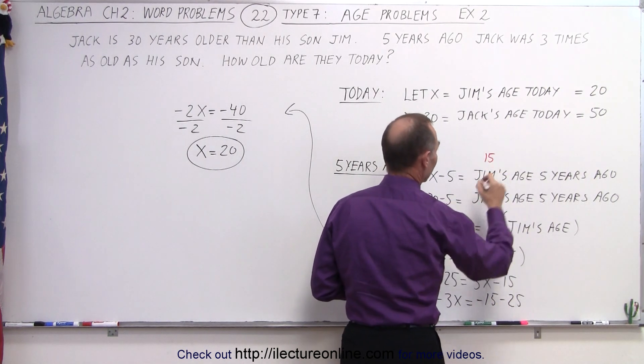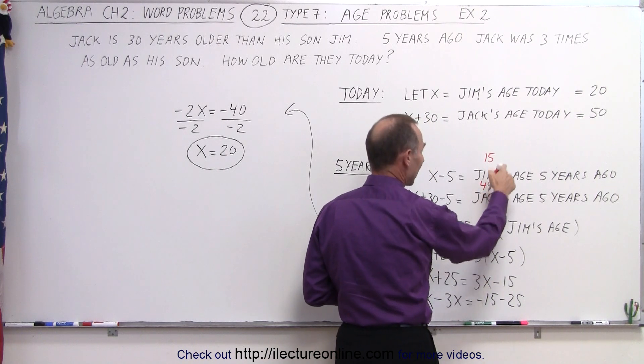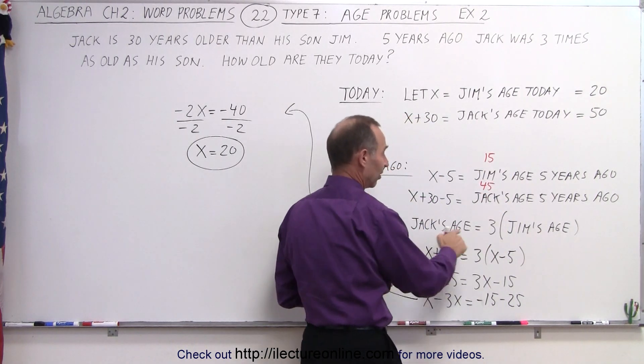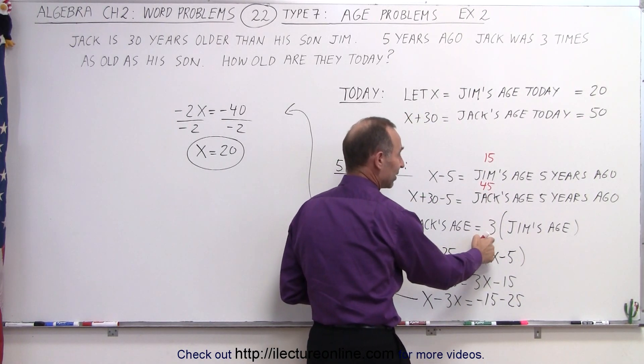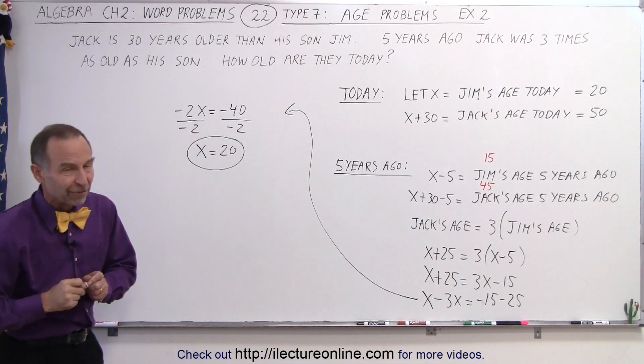And Jack's age would be five years less, would be 45. And is that indeed three times Jim's age? And the answer is yes. 45 is three times 15 which was the age of them five years ago.